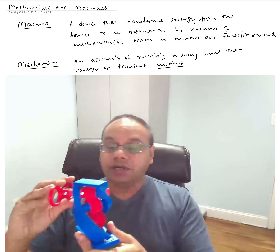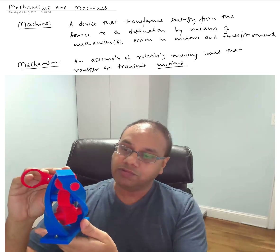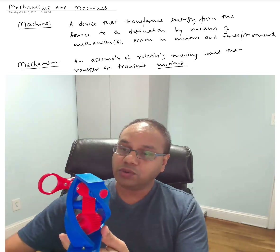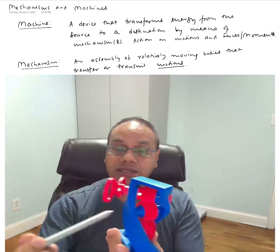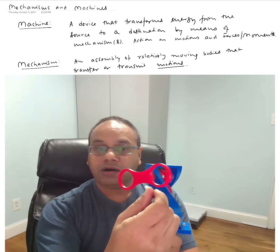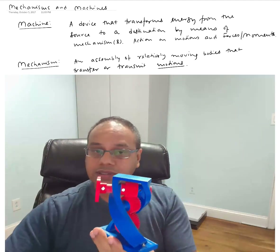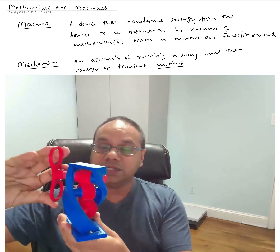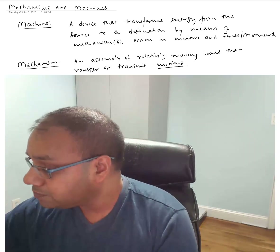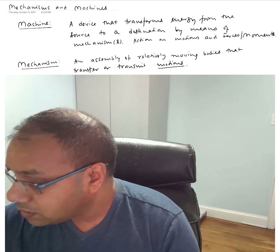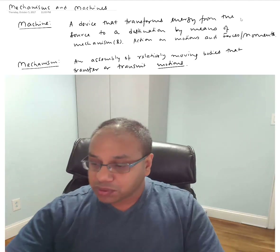Here is another example of a gear-based mechanism, slightly more complicated than what you saw before. The axis of rotation for the input is in one direction, and then the other gears are at an offset from that axis. As I rotate this input gear, you can see these gears rotating along with it. These are just a few examples of seemingly simple mechanisms.